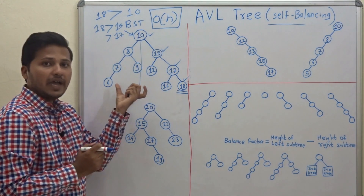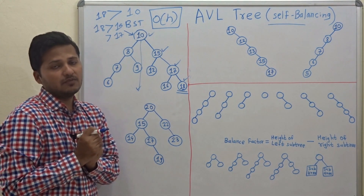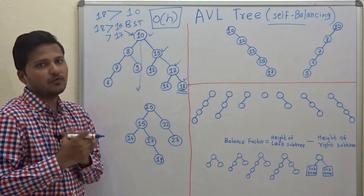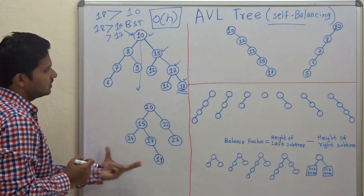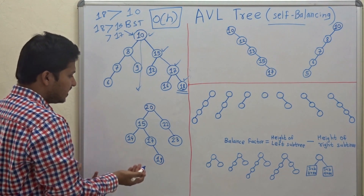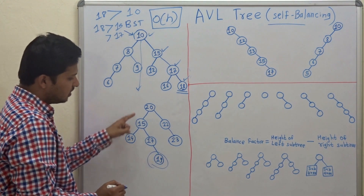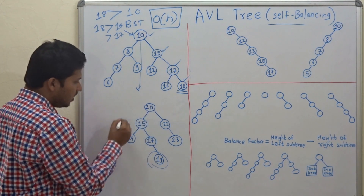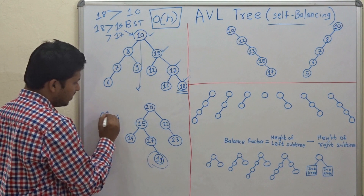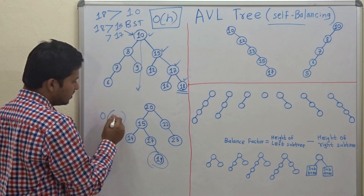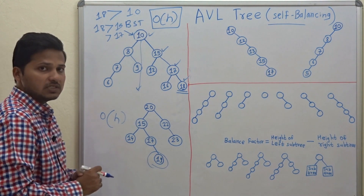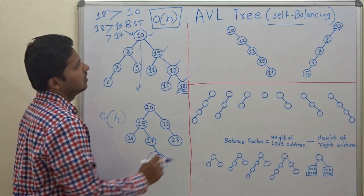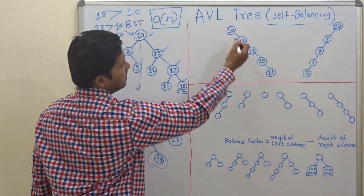For finding out the height of a binary tree, you can see my video — the link is in the description below. Now, in this second example, if you want to find 19, you need four comparisons, which is again equal to the height of this binary tree. So O(h) is the worst-case time complexity.